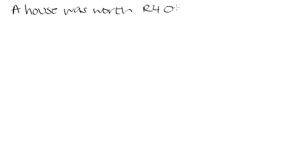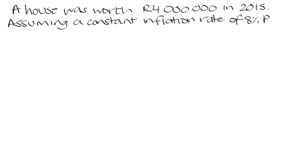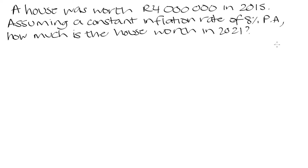A house was worth 4 million rand in 2015. Assuming a constant inflation rate of 8% per annum, how much is the house worth in 2021? We are told that back in 2015, which was 6 years ago, this house was worth 4 million rand, and since 2015 we have had a constant inflation rate of 8% per annum. We have to determine how much this house is worth after those 6 years of inflation.